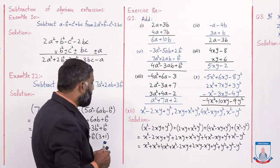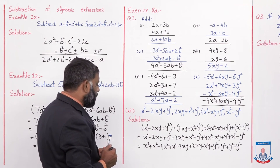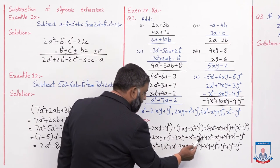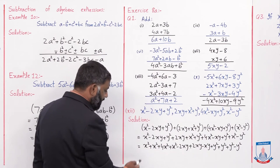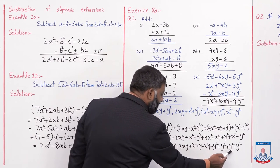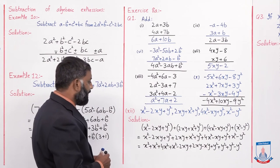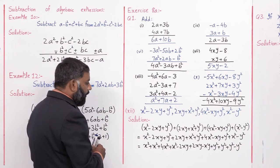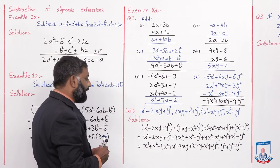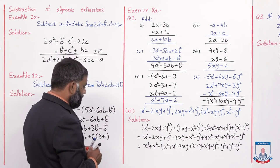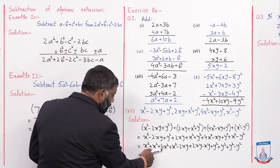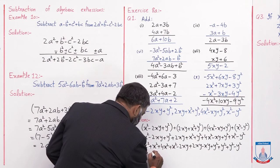Ab students, aapko yeh kaise pata chalega ke koi term miss nahi hui? In terms ko count kar lein: 11 terms hain. Dobara count karein: 1, 2, 3, 4, 5, 6, 7, 8, 9, 10, 11 — matlab aapne saari terms likh li hain. Ek aur method hai: x² wali terms jab likhein to tick lagate jaayein, is tarah bhi koi term miss nahi hogi. Ab add karenge: 1 + 1 + 4 + 1 = 7x².